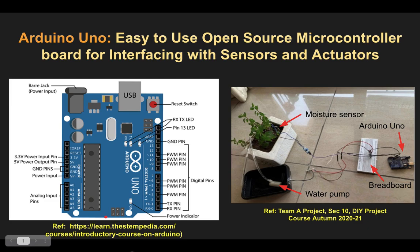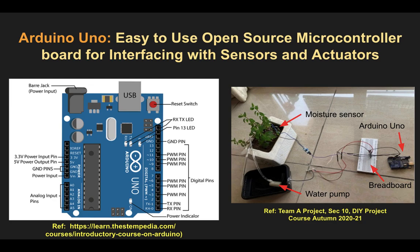What you are looking at on the left is a schematic of the Arduino board with various labeled pins. You need to know how it is going to be powered and how logic is placed into the board. You can power this board using a USB cable connected to your computer, which is used both for powering the board and transferring data — writing a program into the board and sending sensor data back. Alternatively, it can be powered using a DC power input between 7 and 20 volts.